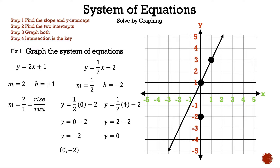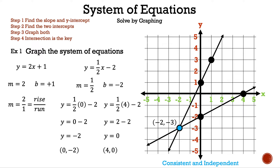Now let's plot the point on the graph. Now that we have two points, we can draw our line. We can determine the answer to the system by looking at how many times the two lines intersect. In this case, the two lines intersect only once, at the point negative 2, negative 3. And this is the answer for the system. Our graph is consistent and independent.